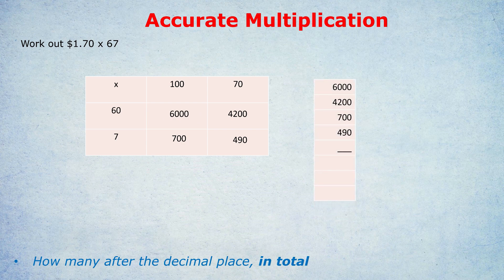It doesn't matter the order by the way in which you write these numbers. Adding these up, the units digit is 0. And then we've got a 9, and then that would be 13, so we put a 3, carry the 1. And 10 plus 1 is 11, so it's 11,390.